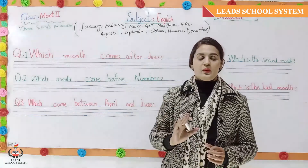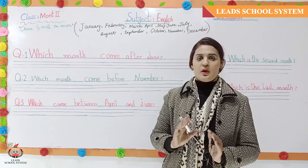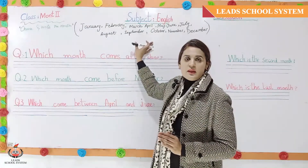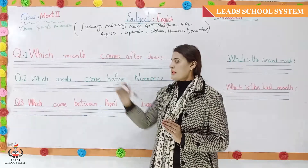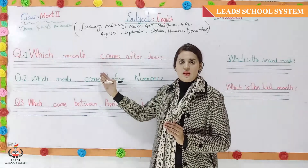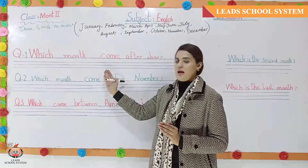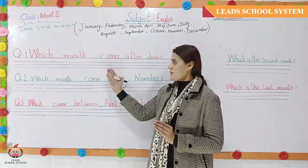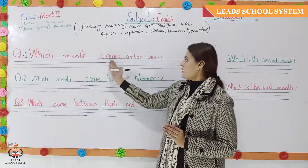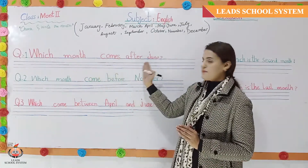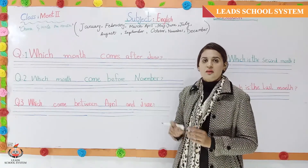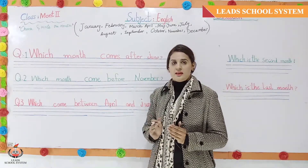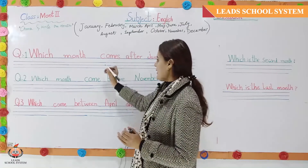In the book, you will see page number 40 at the top — Months of the Year. Questions are asked from the bottom of the page; choose and write the answers on the lines. First of all, we will ask: which month comes after June? If you remember the spelling, you will write it here.